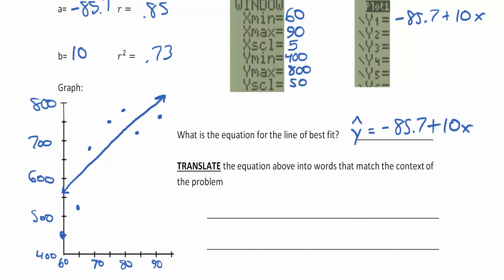Your XYZ homework may want the slope before the y-intercept, so 10x minus 85.7 may be the way it wants it. Just look for guidance there.